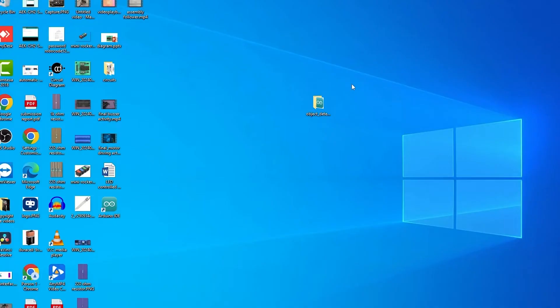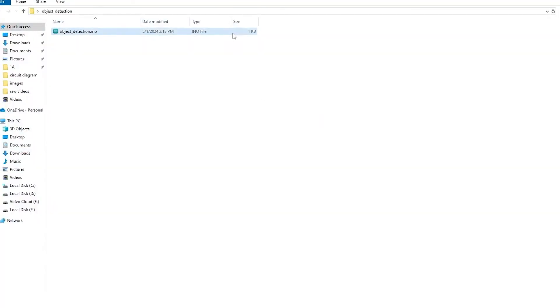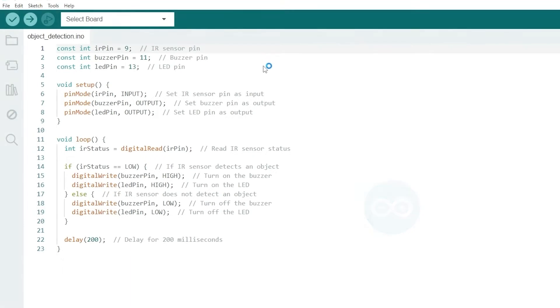Now open the file if you've already downloaded the Arduino IDE, otherwise download the Arduino IDE first. Here you can see first we have to define the pin connections for the IR sensor, buzzer and LED.